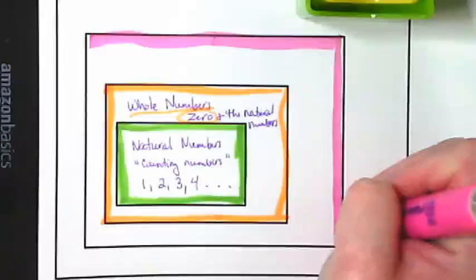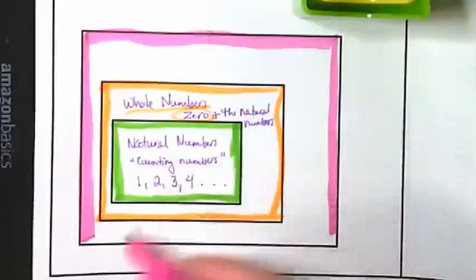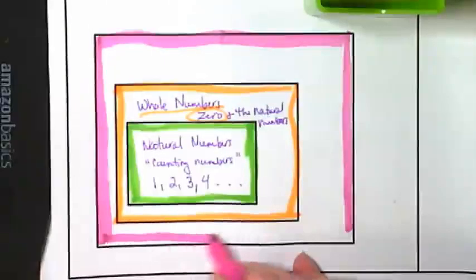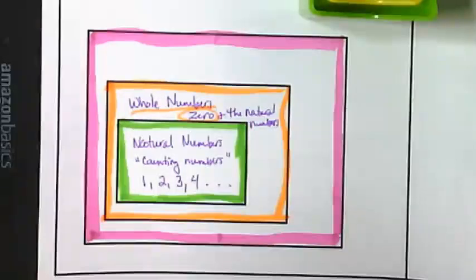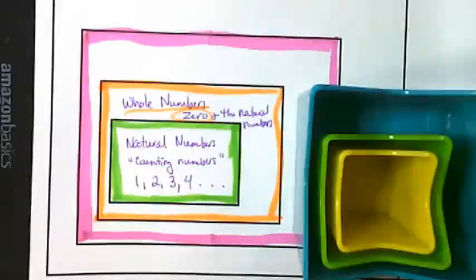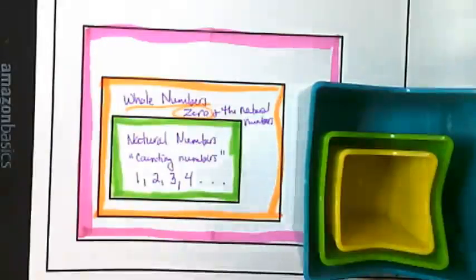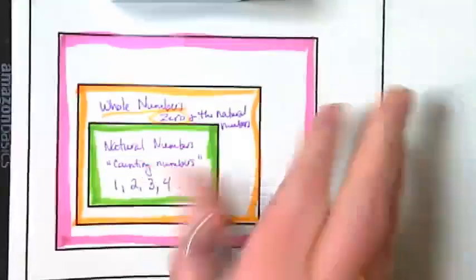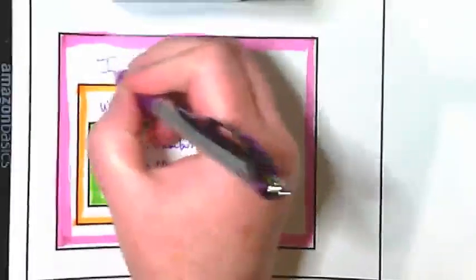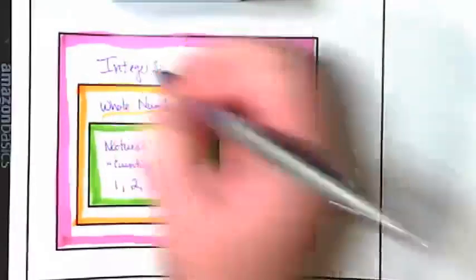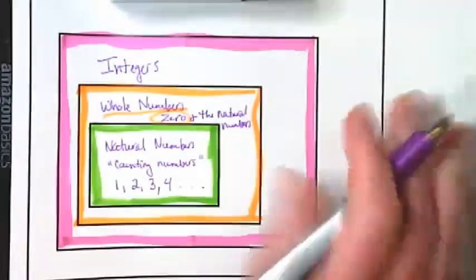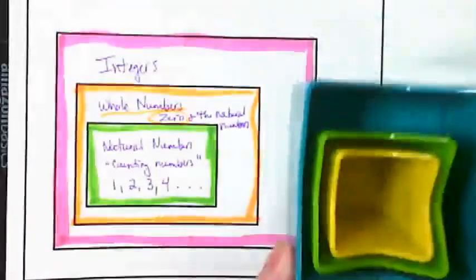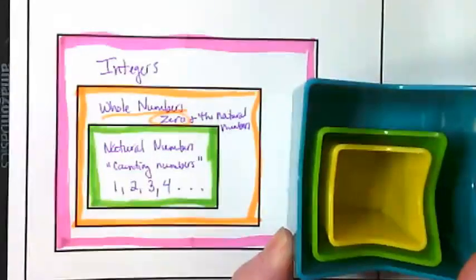This new number set, our next largest set, practically doubles in size. The natural numbers go in it. The whole numbers go in it. And then when we add this new set, it pretty much doubles in size the numbers that we have. These are the integers. We define this set as the whole numbers and their opposites.